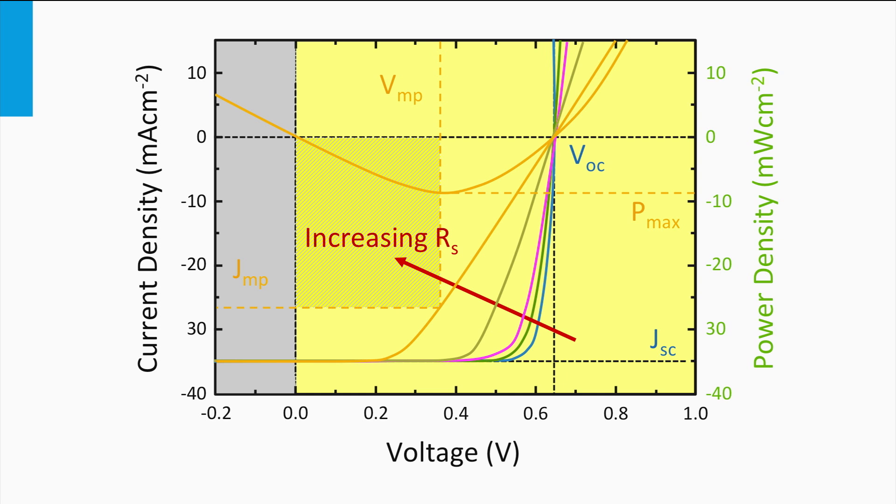This also implies that the larger the series resistance will be, the smaller the fill factor. In conclusion, the series resistance can affect the fill factor and has to be as small as possible for high fill factors. Note that the series resistance does not affect the position of the open circuit voltage. As at the open circuit voltage the current density is equal to zero, the voltage drop over the series resistance is zero as well.